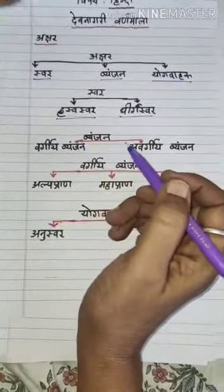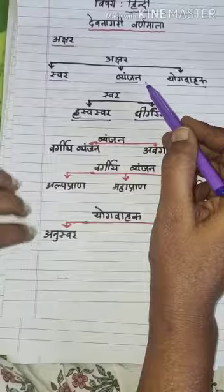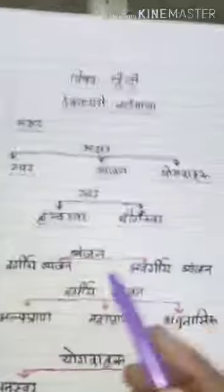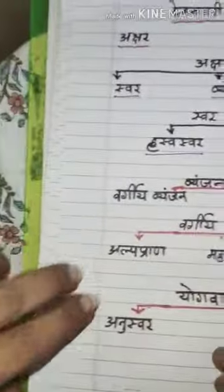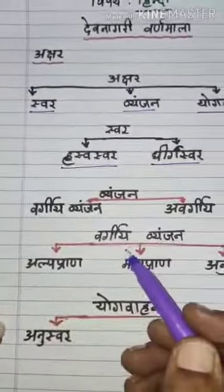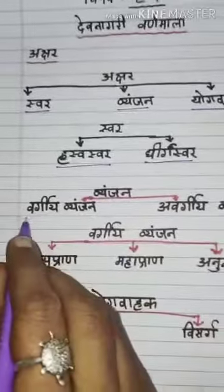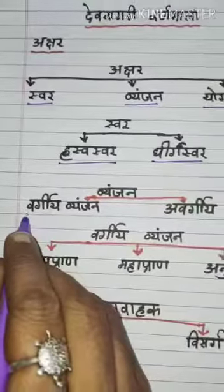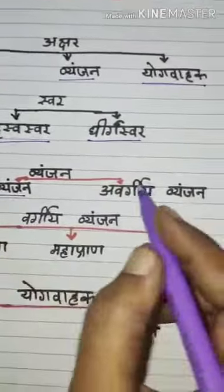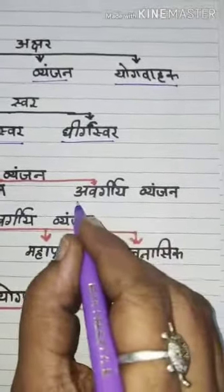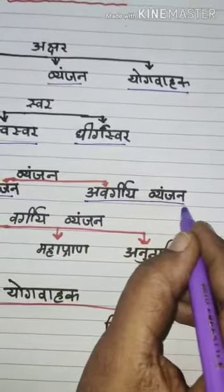Now we will go to Venjan. Venjan — there are two types. One is Vargiya Venjan. The second one is Avargiya Venjan.